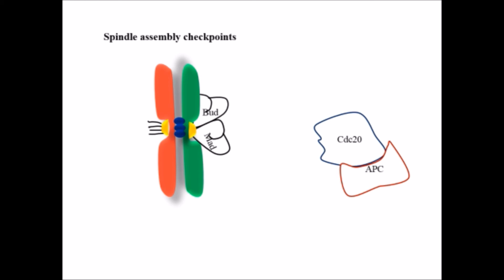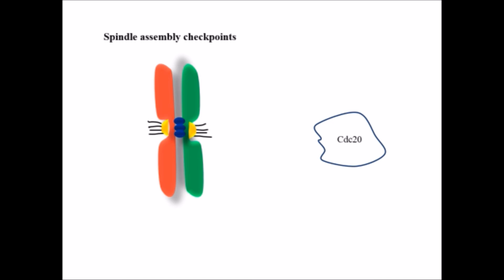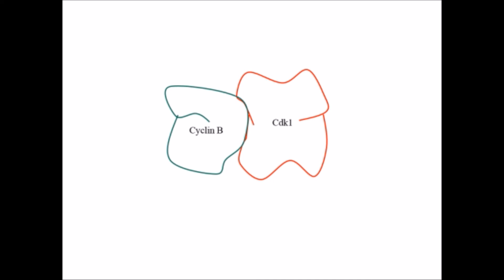Once the spindle fiber has formed and the cell progresses to anaphase, this is mediated by the Anaphase Promoting Complex, APC, which is a ubiquitin ligase. Unattached kinetochores bind to MAD and MAT proteins, and this binding activates MAD, leading to inactivation of CDC20, which cannot then activate APC. So APC remains inactivated. But when kinetochores get attached to the spindle fiber, CDC20 is activated, enabling APC to carry out its function. The MAD-MOB complex dissociates after all chromosomes are aligned, leading to full activation of CDC20 and APC.